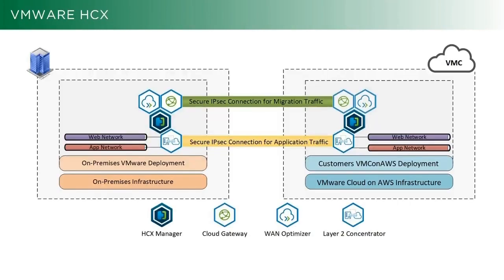Let's take a quick look at the topology from a high level of HCX. On the left we've got our on-prem infrastructure, and on the right we have our VMC installation and our SDDC. You can see we've got four major appliances on both sides and two IPsec tunnels. The green tunnel at the top is used for replication traffic — when you're replicating disks for either DR or live migration. The second dedicated tunnel is for network extension, so web and app networks go through that IPsec tunnel and pop back out on the VMC side still as the web and app networks.